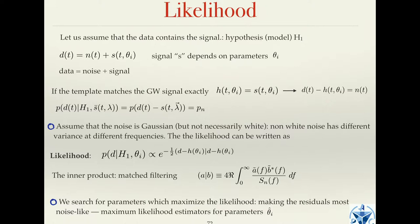The key point here is this inner product — it is a product between the data and the template. It's a correlation. We also introduce weights inside this correlation to show that our detector is not sensitive equally at different frequencies. In other words, the variance of noise at different frequencies could be quite different. In the case of LIGO, Virgo, or LISA, it is higher at very low frequencies and at very high frequencies, and the best sensitivity is somewhere in the middle.